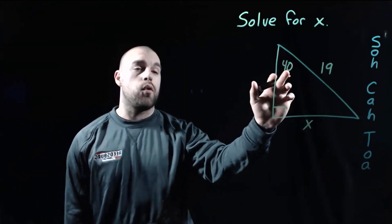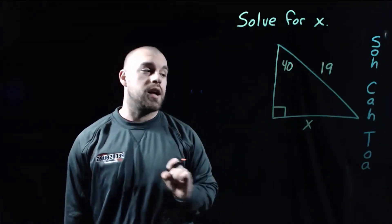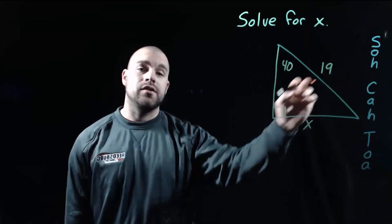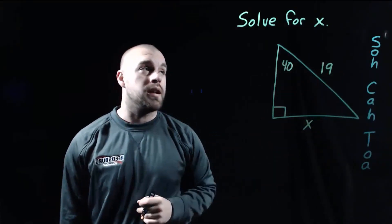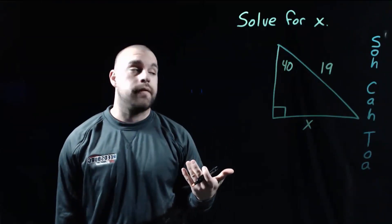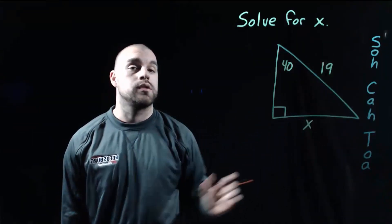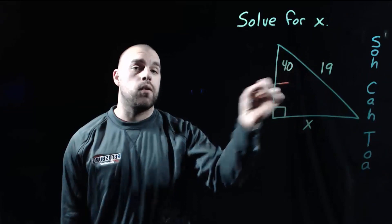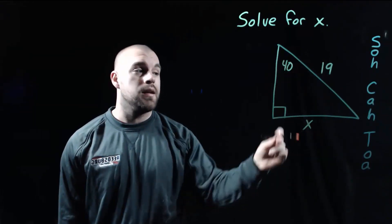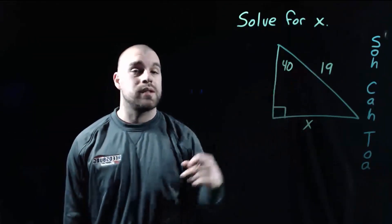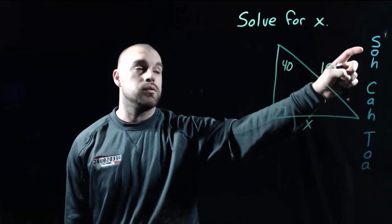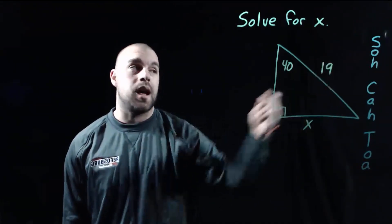In our next example, we've got a 40-degree angle. We're given X as the side across the bottom, and 19 is going to be the hypotenuse, since that's across from the 90-degree angle. The very first thing we need to figure out is which trig ratio we're using. If we're looking at the 40-degree angle, X is the opposite side and 19 is the hypotenuse, so we're going to use sine, because sine uses opposite and hypotenuse.